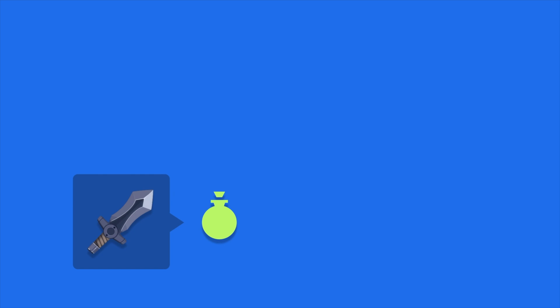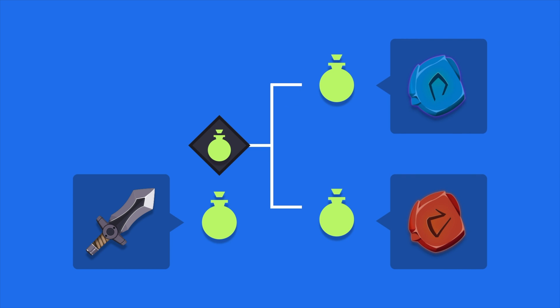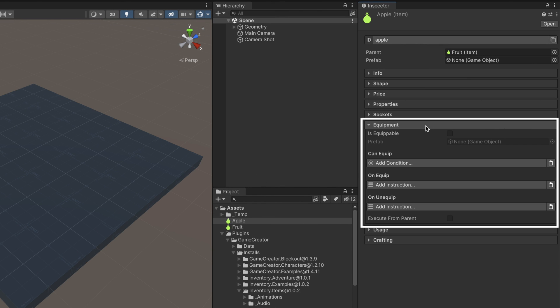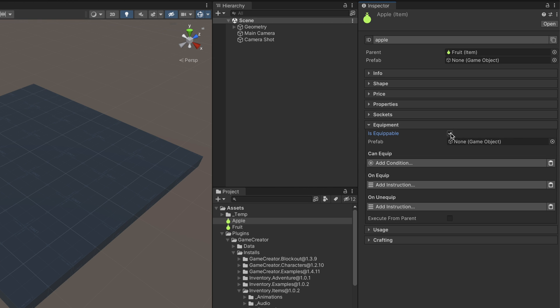For example, let's say we want to have a socket slot to put in a rune on our metal sword. We can create an item called Rune, which will be the base item for all of our runes. Then we assign this base item onto our metal sword socket, which tells the metal sword that this weapon can only have rune items attached. The Equipment section allows defining equippable items, what they do, and whether a character is allowed to use them or not.